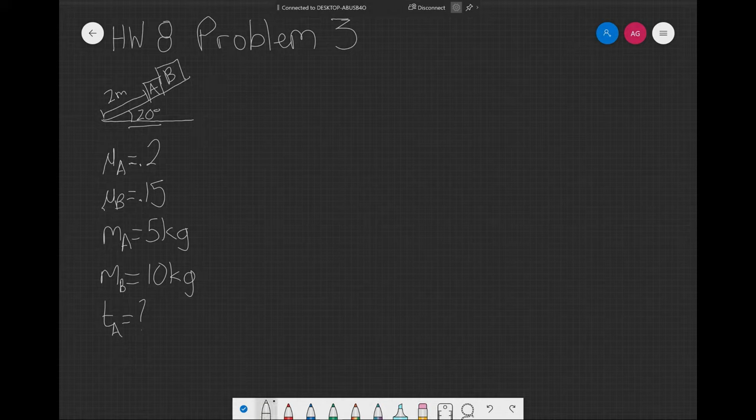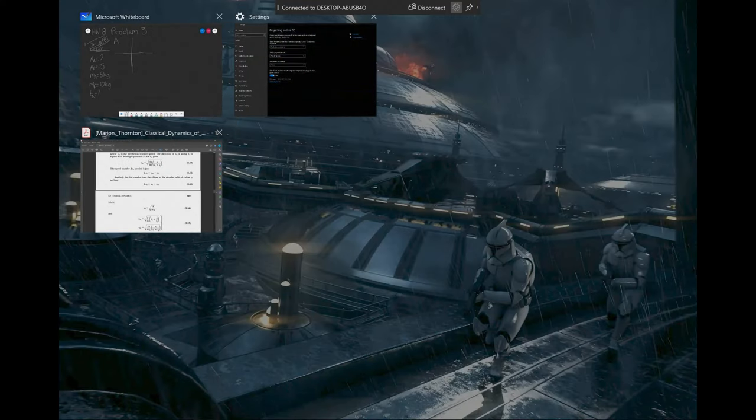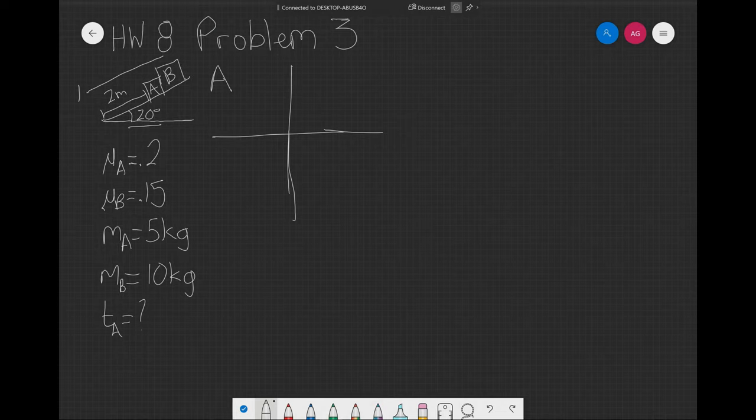Knowing that, let's jump now to the free body diagrams. It's important to remember that usually when we have inclined planes, it's convenient to call our x-axis parallel to our plane, the incline, so that our gravity ends up coming this way with an angle of 20 degrees here. This is gravity of A.